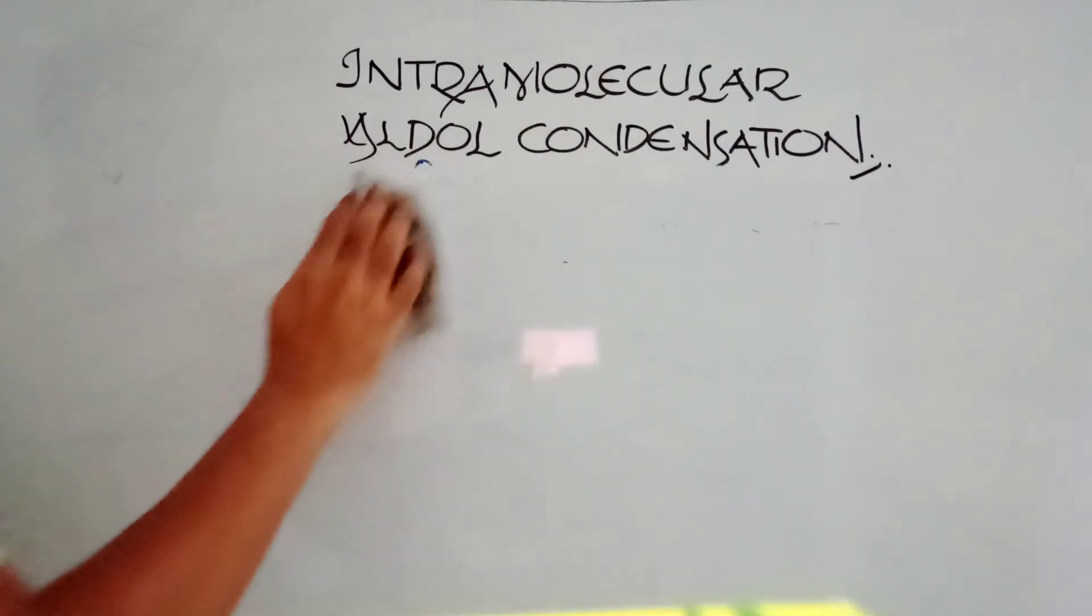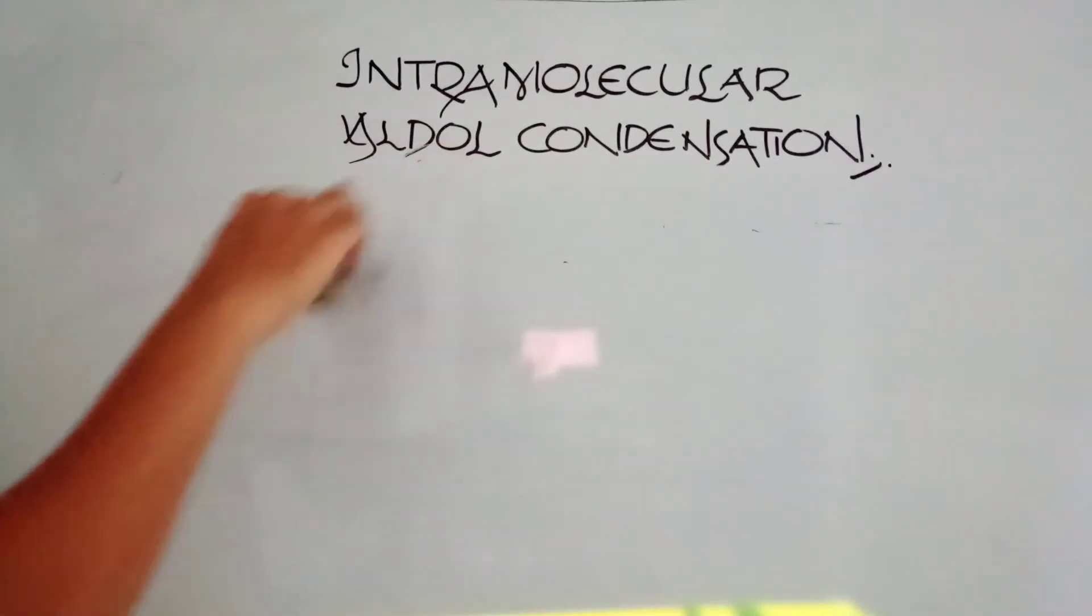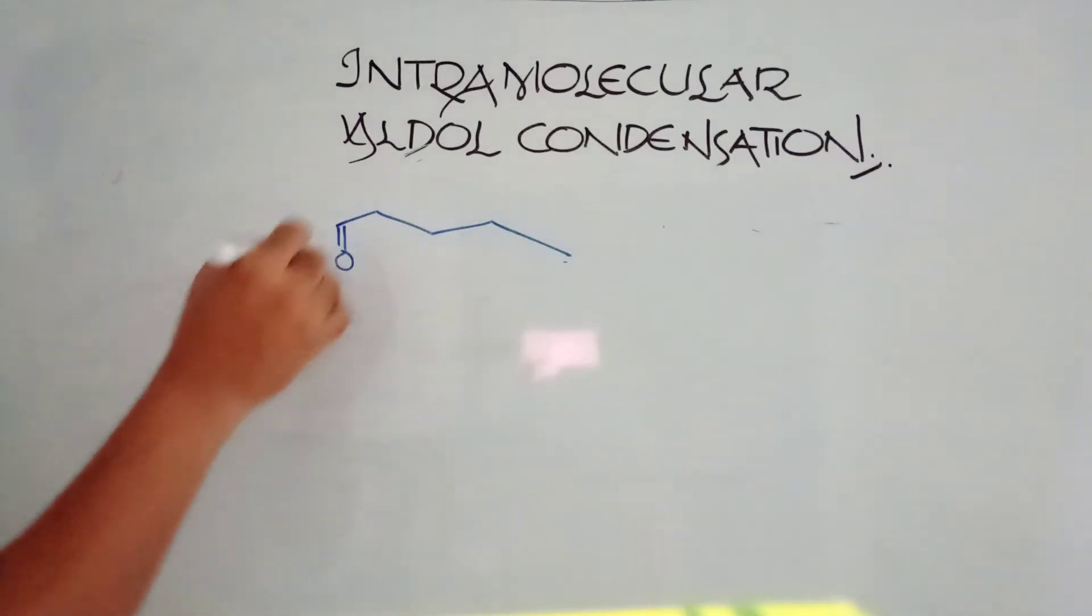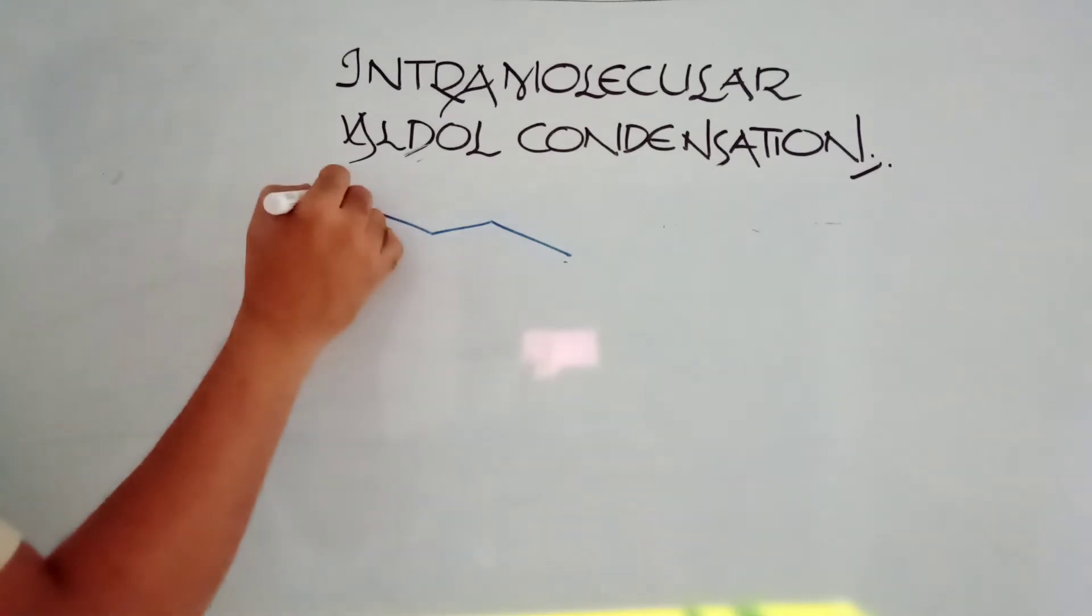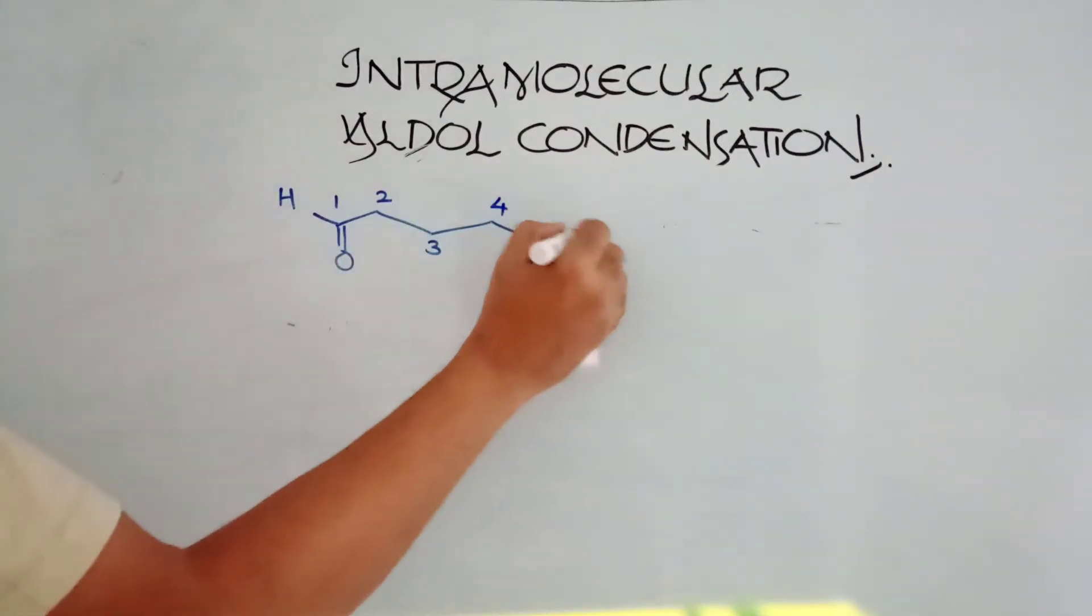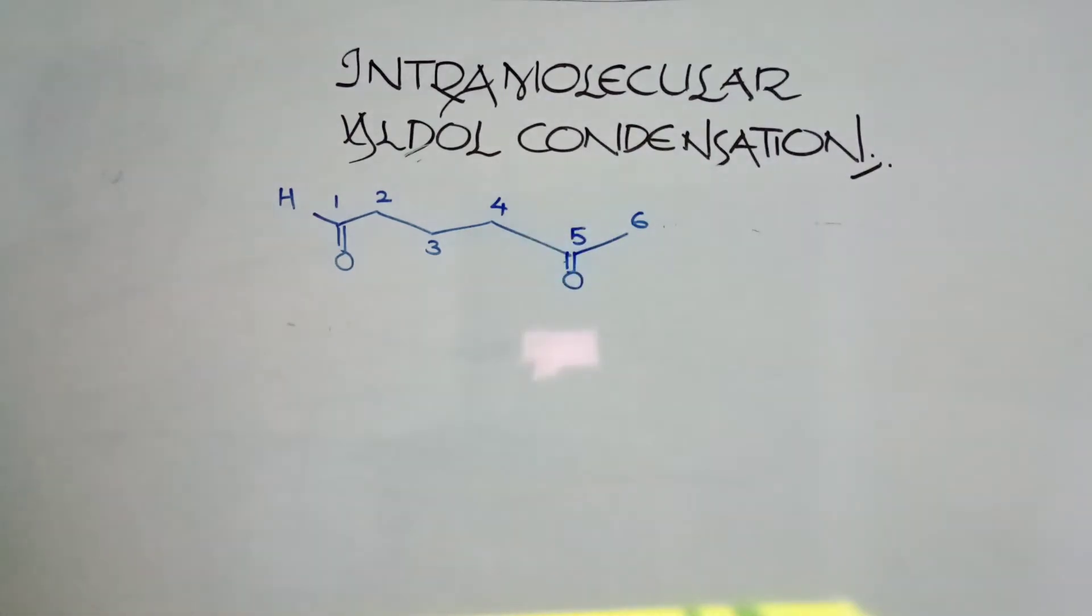Just have a look. One-five case we will see. Double bond O, this is hydrogen. First place, second place, third place, fourth place, fifth place, sixth place. One-five diketone. We know the conditions.